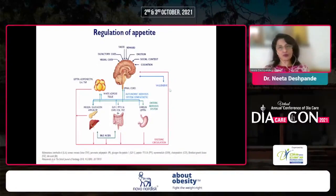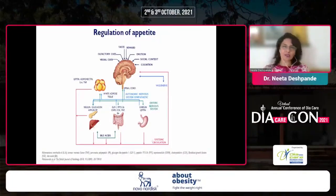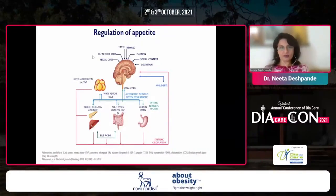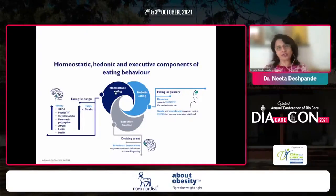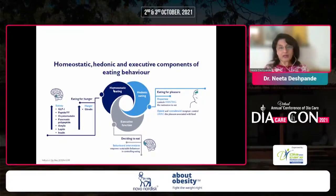Each of these organs produces several hormones, so you can imagine how many things can go wrong at several levels. There is a very, very complex interplay. One mechanism is simple homeostatic eating — you're hungry, you have hunger hormones and satiety hormones in the brain, and you eat or you're full. That energy balance equation is dependent only on this homeostatic component.